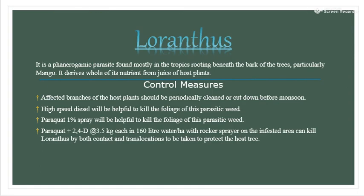Loranthus is a phanerogamic parasite found mostly in the tropics, rooting beneath the bark of trees, particularly mango. It derives all of its nutrients from the juice of the host plant. Control measures: affected branches of the host plant should be periodically cleaned and cut down before monsoon. High-speed diesel is helpful to kill the foliage of this parasitic weed.